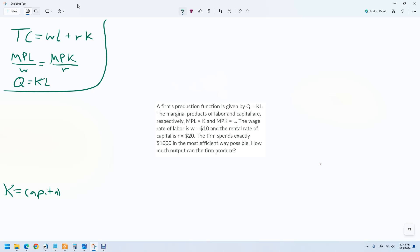So we know that what we're working with here is $1,000 because in the problem, it says the firm spends exactly $1,000. And then we know that the wage is $10, and then we know that the rental rate of capital is 20, and we're going to multiply that by K. So this is the cost function.